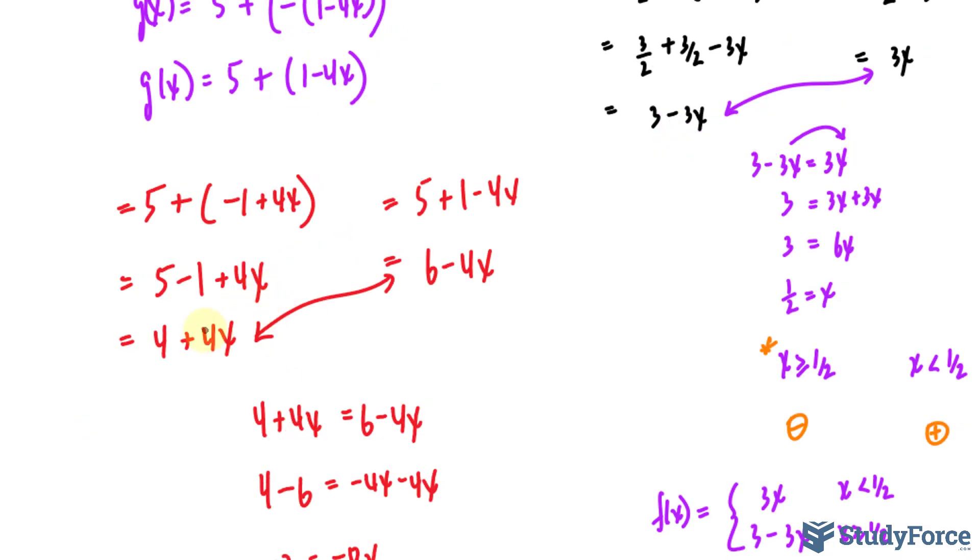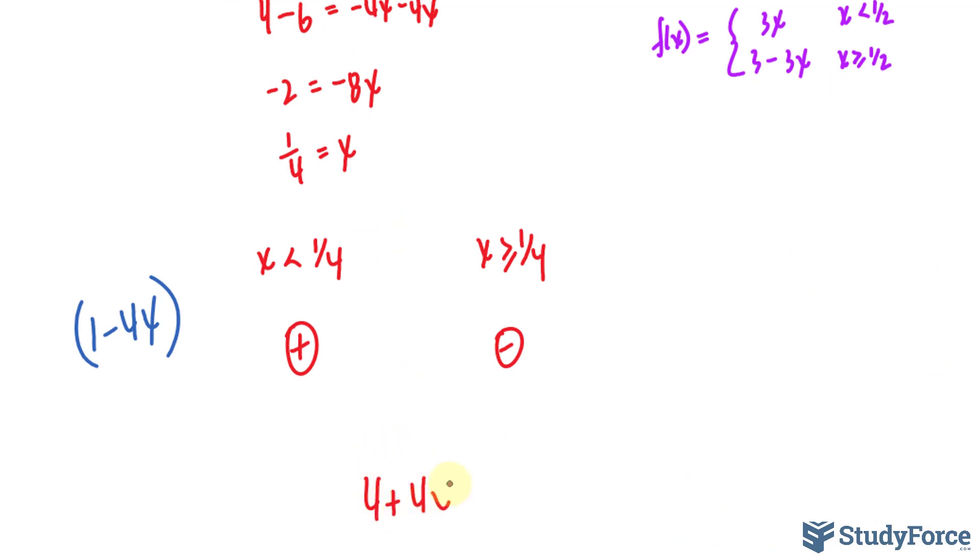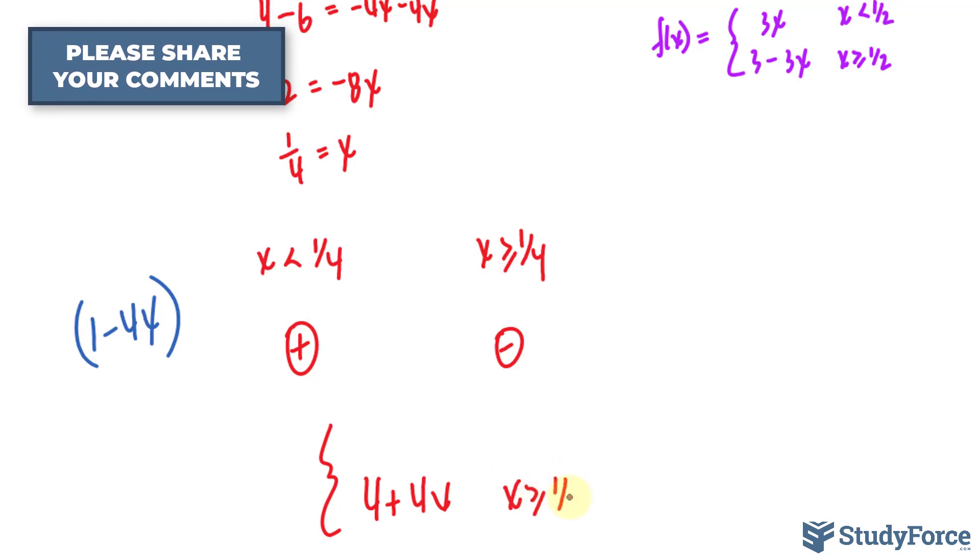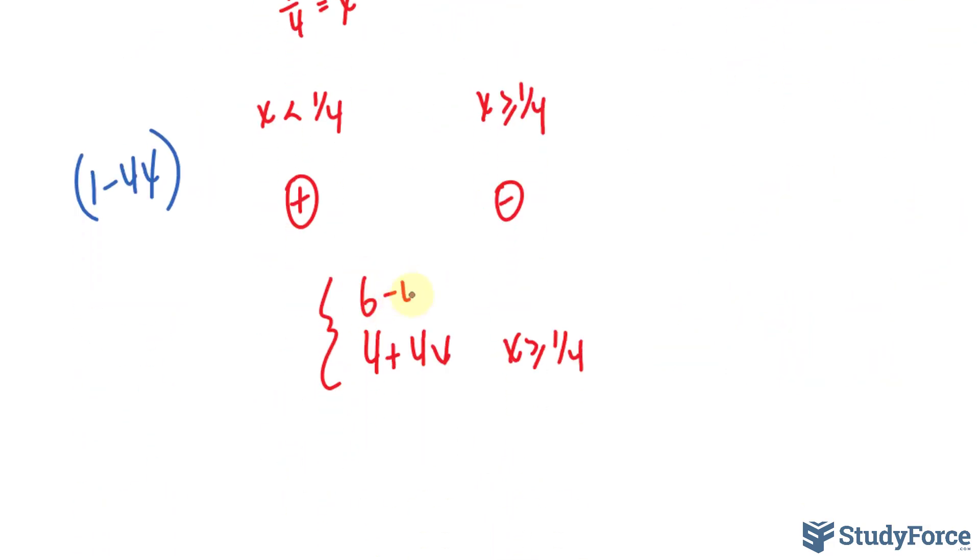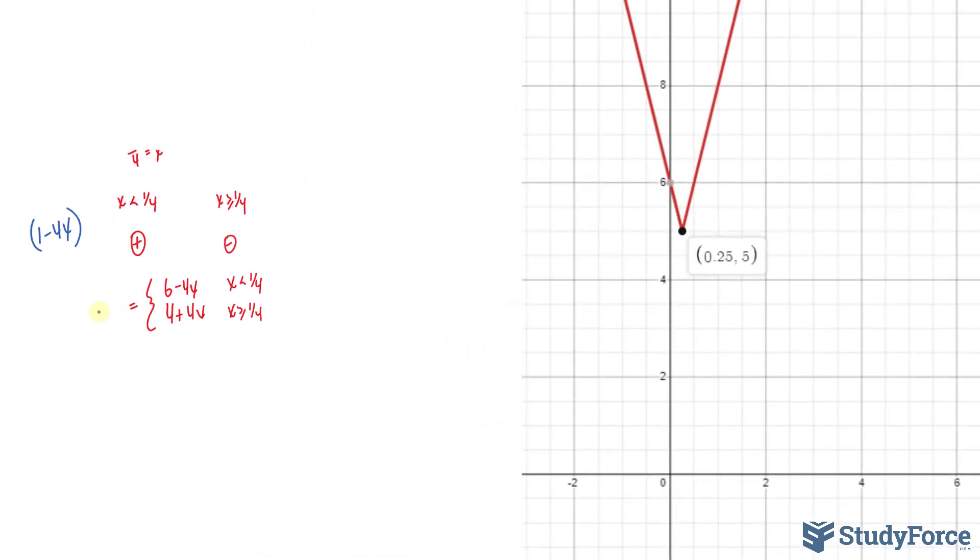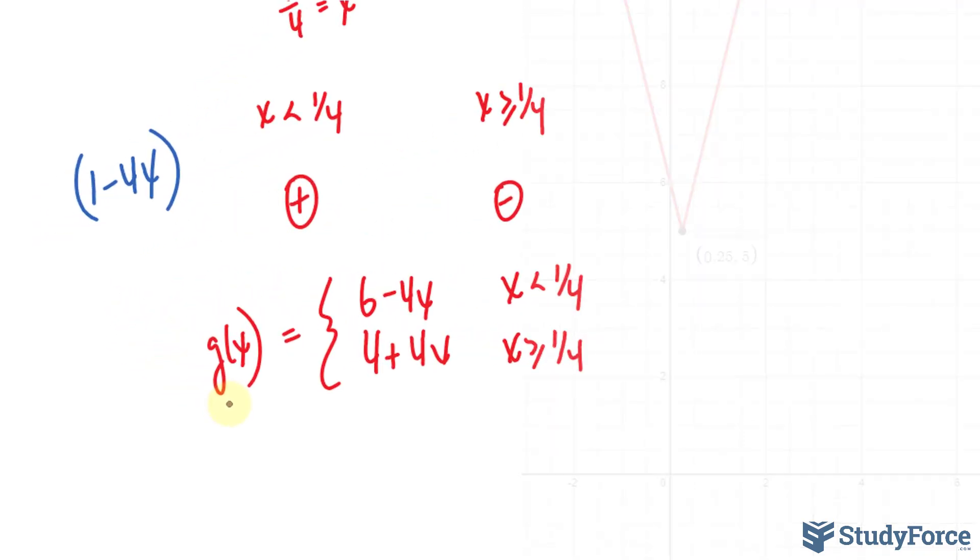This was the expression for when it was negative. So I'll write down 4 plus 4x, when we have x is greater or equal to a quarter, and this was our expression for when it is positive. 6 minus 4x is for x being less than a quarter. And that's our function as a piecewise function.